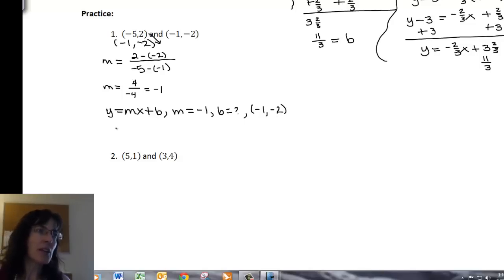Plug everything in. So I have negative 2 equals m is negative 1, x is negative 1, and then plus b. So multiply those, I get 1 plus b equals negative 2. Subtract 1 from both sides, and I end up negative 3 equals b.